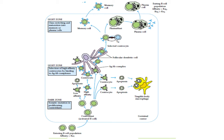Any centrocyte that expresses surface antibody which has less affinity or no affinity towards the antigen displayed on the dendritic cells is killed by the process of apoptosis, because if such antibodies are secreted, they will be of no use to fight against the antigen. Therefore, only the centrocytes that have antibodies with affinity towards the antigen expressed on the dendritic cells are allowed to differentiate into plasma cells that secrete the antibody against the antigen. Centrocytes killed by apoptosis are removed from the spleen by macrophages which engulf, process, and degrade the centrocyte.